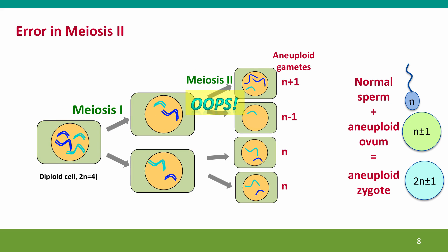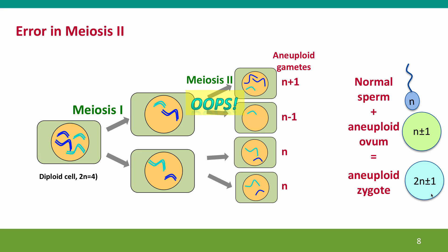These errors can also happen in meiosis 2. In that case, only one pair of daughter cells are affected — one has n+1, one has n-1. The other two gametes are normal. And again, if an aneuploid gamete is fertilized by a normal sperm, we'll get an aneuploid zygote.